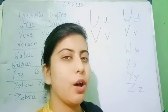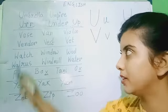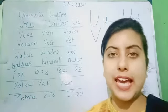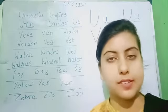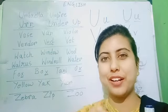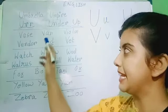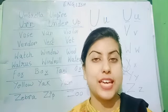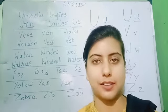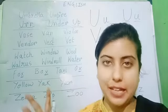Now, we will learn some words with V. The first is vase. V-A-S-E. Vase. Like flower vase — we keep flowers in a flower vase. Next, van. V-A-N. Van. Van is a big car which can carry many people.